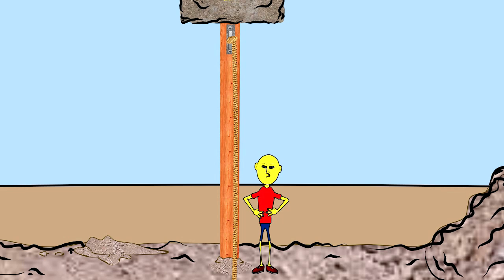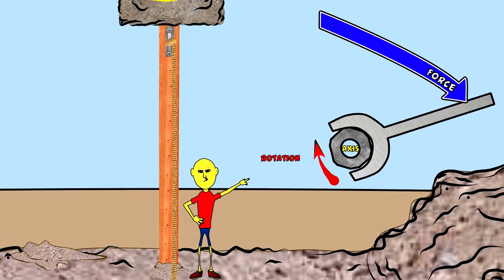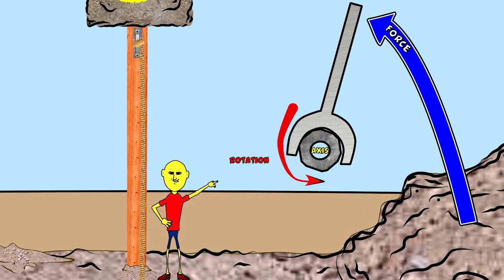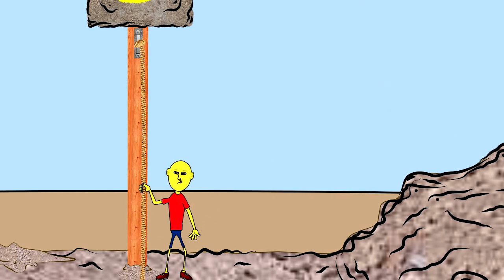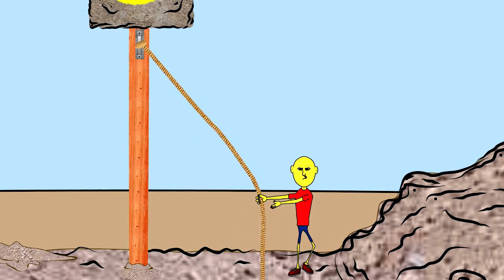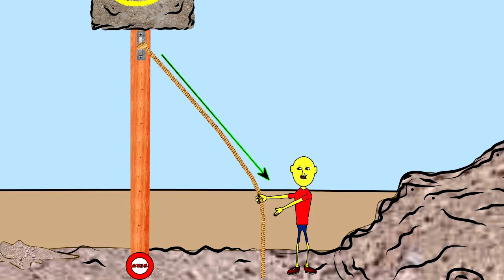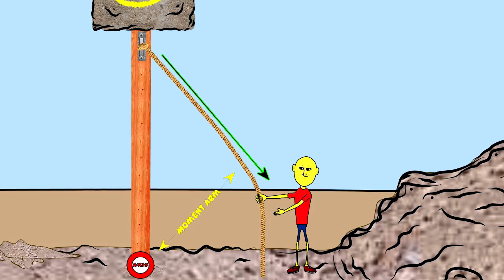We use torque to make our bones move around these joints or axes. Torque is using a force to produce rotation around an axis. A line of pull is where we generate the torque in our body, and the distance between that line of pull and the axis is known as a torque arm or moment arm.